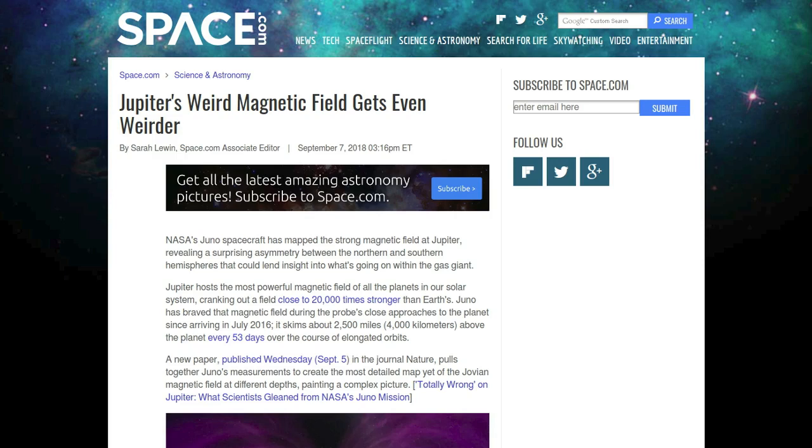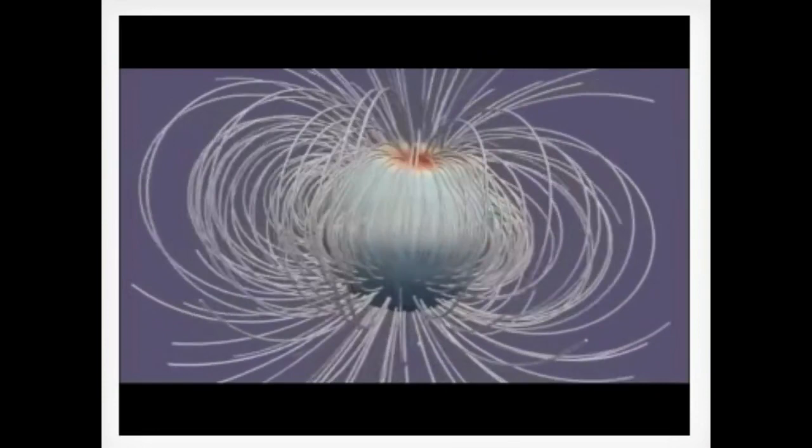Juno has braved the magnetic field during close approaches to the planet since arriving in July 2016. It skims about 2,500 miles, that's 4,000 kilometers, above the planet every 53 days over the course of its elongated orbit. Well, so far so good. Matt is reading the space.com website story entitled Jupiter's weird magnetic field gets even weirder. Other than the usual problems he has, I can't fault him here.